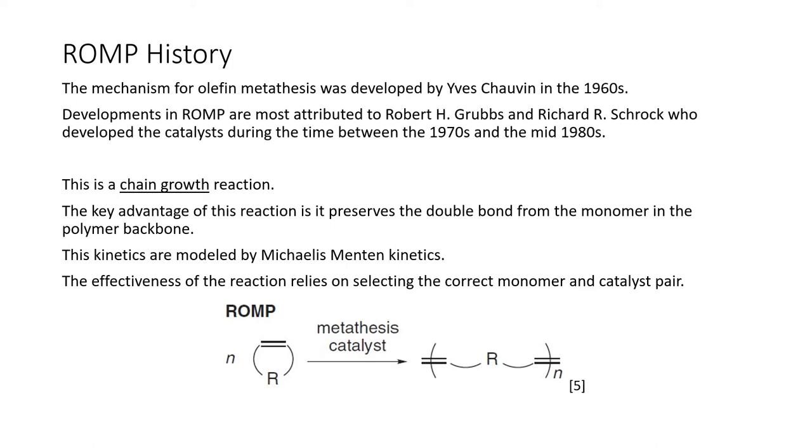So the mechanism that we just saw in that last slide for olefin metathesis was developed by Yves Chauvin in the 60s. However, the majority of developments for olefin metathesis and specifically for ROMP are attributed to Robert H. Grubbs and Richard R. Schrock, who developed the catalysts used for this olefin metathesis in ROMP in the mid-70s as well as the mid-80s.